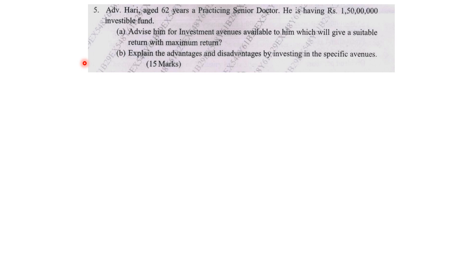It is given that Advocate Hari, age 62, is a practicing senior doctor. He has ₹1.5 crores, that is ₹1,50,00,000, as investable fund. Advise him on investment avenues available to him which will give a suitable return with maximum return, and explain the advantages and disadvantages by investing in the specific avenues. Whenever you get a case study, try to solve it in four parts.